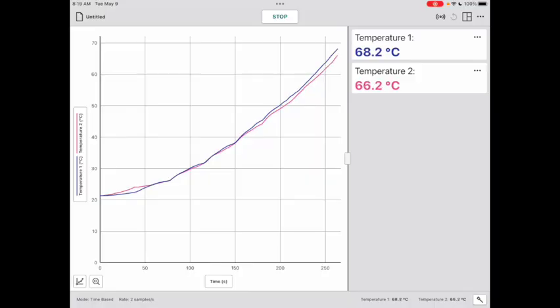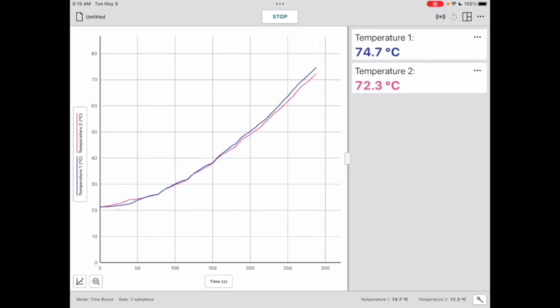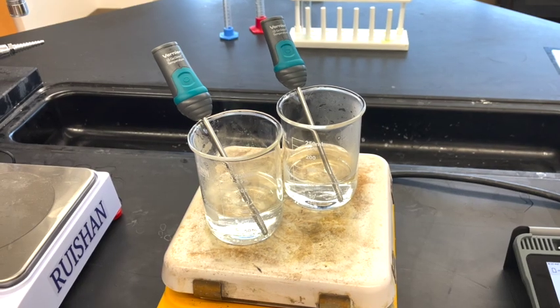The temperature in the beakers continues to climb. The blue line is slowly pulling away from the red line. Remember, the blue line is the one where the salt has been dissolved. As it approaches 100 degrees,